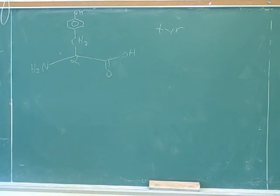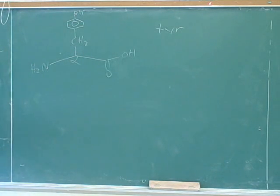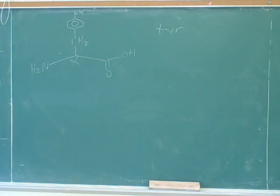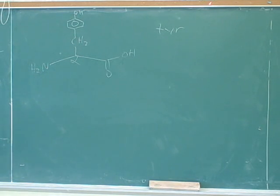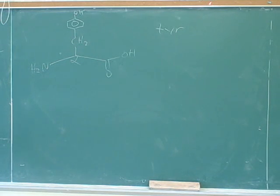Does that mean tyrosine could possibly gain a proton or lose a proton? It would lose a proton. Which proton? The one on the very top — the OH — and then this would become an O minus. This has two different forms. How can we tell which is the correct form? It depends on the pH. If the pH is very low, we would expect everybody to be protonated. An acidic solution protonates everybody. If the pH is very high, everything is deprotonated. Low pH protonates things; high pH deprotonates things.